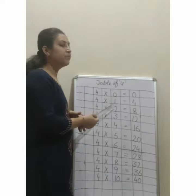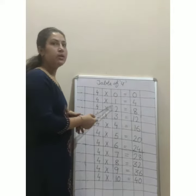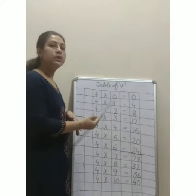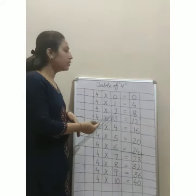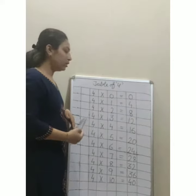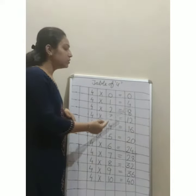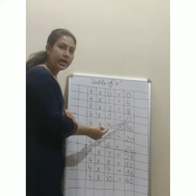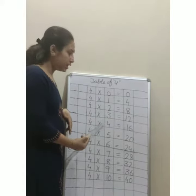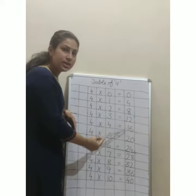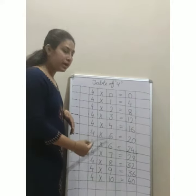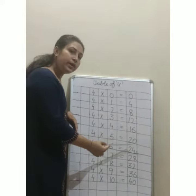4 ones are 4, 4 twos are 8, 4 threes are 12, 4 fours are 16, 4 fives are 20.